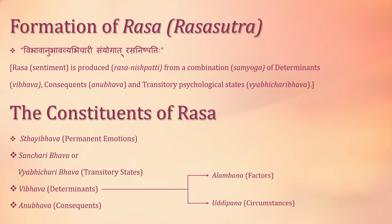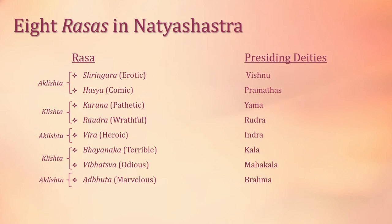Anubhava are the external display of the emotion provoked by Vibhavas. According to Bharatmuni, there are eight rasas — a ninth rasa was further added by Abhinav Gupta, who was the great commentator of Natya Shastra. The formation of rasa is related to three categories of emotions: Klesht, Aklesht and Tatasth. Tatasth is not mentioned for the eight rasas because it includes only the ninth rasa which was further added.